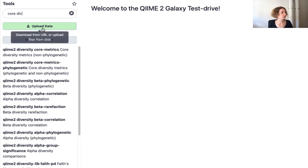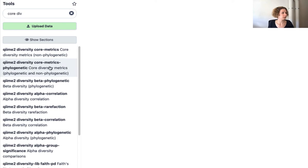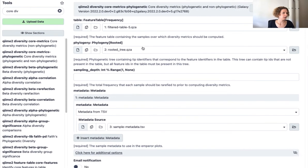So I'm going to close this here and now let's actually do the diversity analysis. I'm just going to type that in here. You can also click through it. So you can see here, this is the diversity core metrics. If we don't have any phylogenetic information available, but I'm going to pick this one.